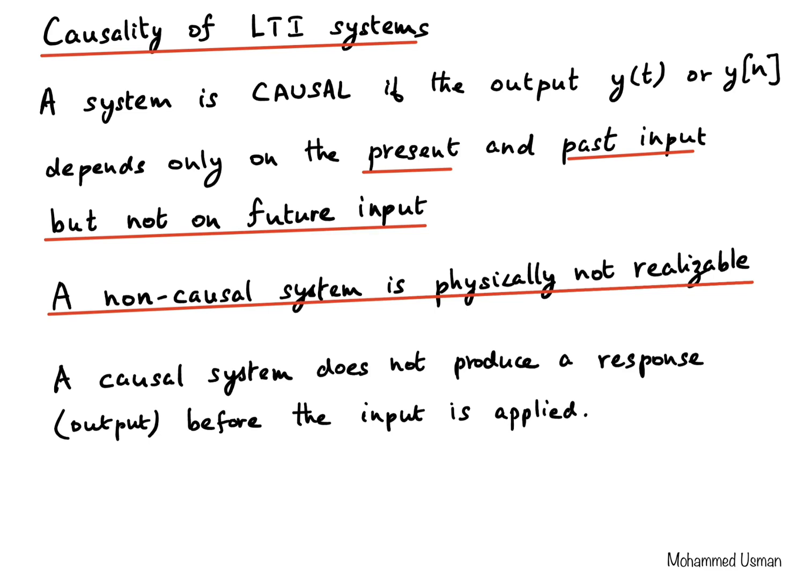In electrical engineering, for example, we could not make a circuit that produces an output depending on a future input — that would not be physically realizable. Whatever system we develop, we must ensure it is causal so that it can be physically realized. In simple terms, a causal system will not produce a response before the input is applied; whatever response it produces happens after the input is applied, but not before.